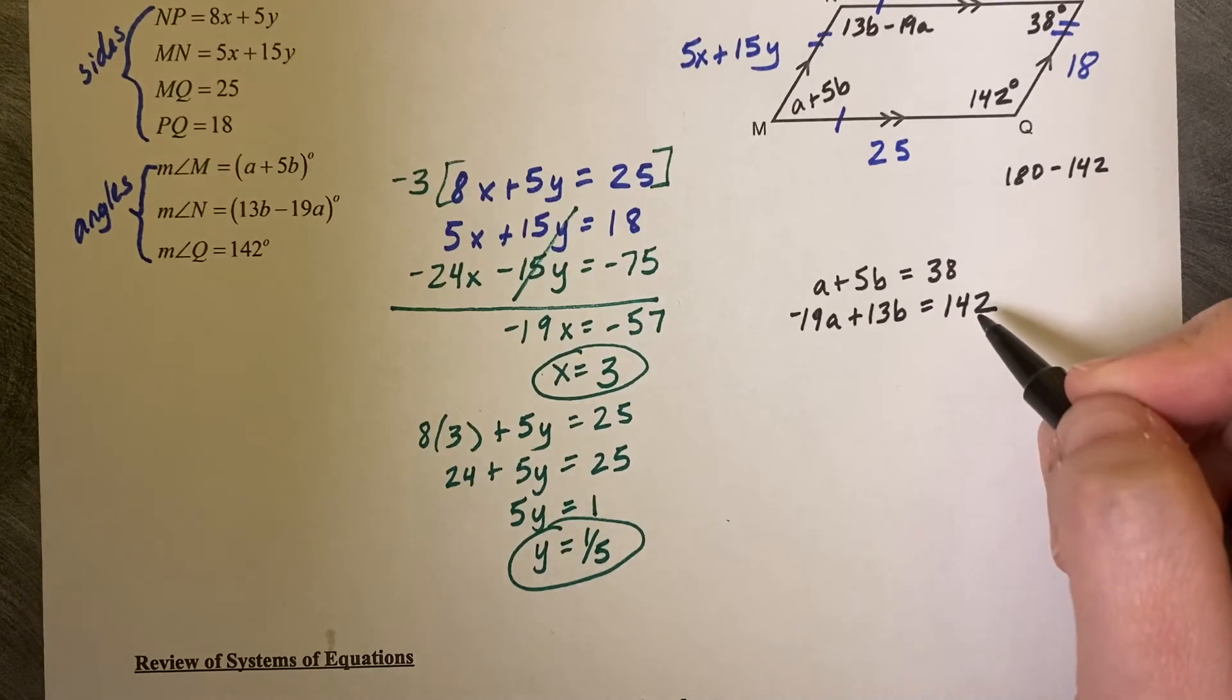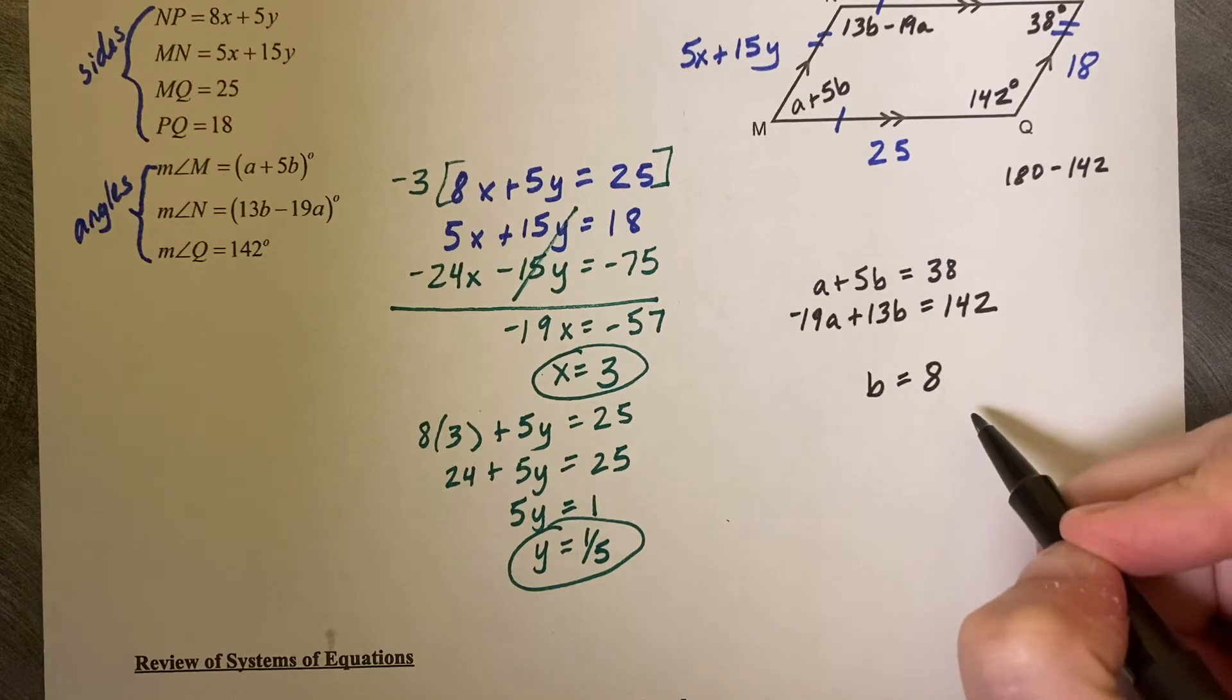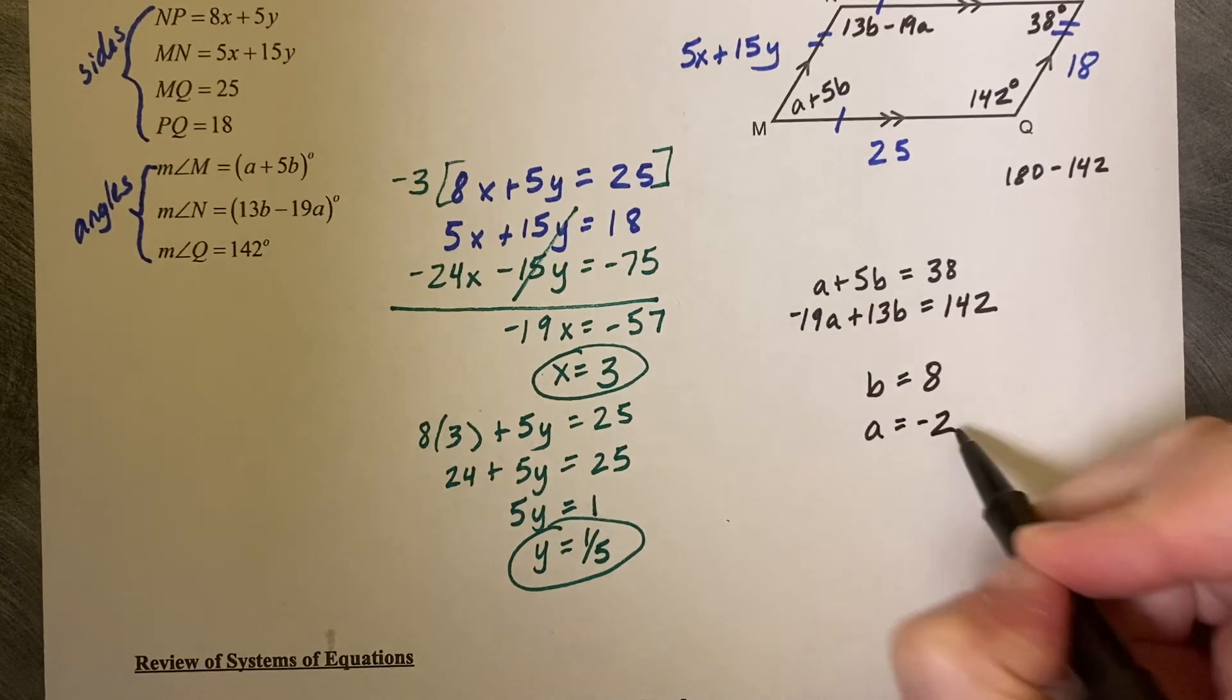I'm going to give you solutions to save time. You should get B equal to 8 and A equal to negative 2.